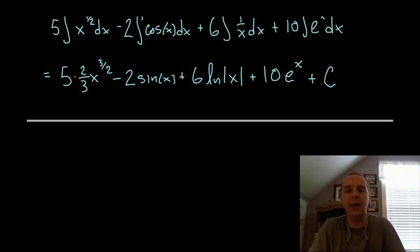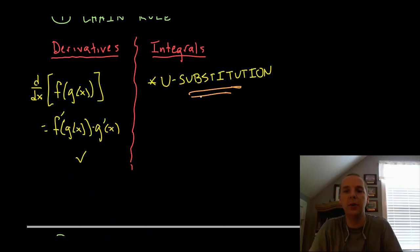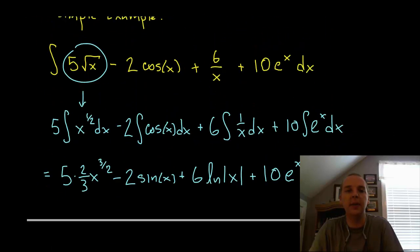This one admittedly is kind of a simple example. To do really a lot of integrals, you're going to need to watch the video on u substitution. This is a big one because we would have been in big trouble if this had been 5 times the square root of x plus 2 even. It seems like it's such a small detail, but that technically would not have been the power rule. 10 e to the 4x, and so on. You have to know how to handle composition of two functions.